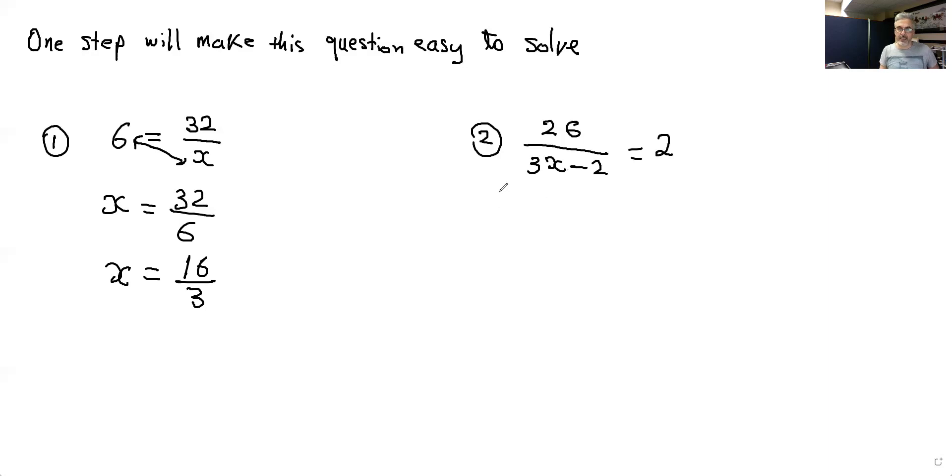How about if we have something like this? The same thing, even though here it's only x, but here it's an expression, it's a binomial. It doesn't matter. All of this will go where the 2 has and 2 will come where the 3x minus 2 has. One easy step, the whole question becomes easy.